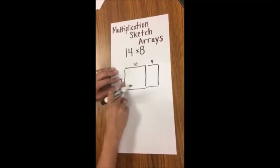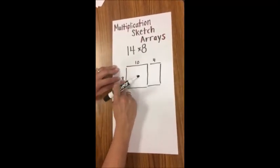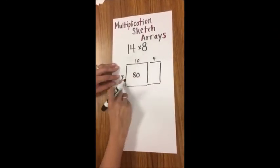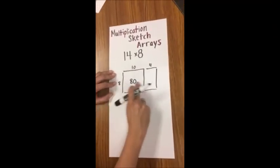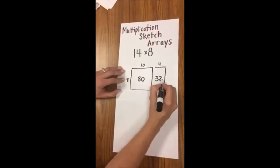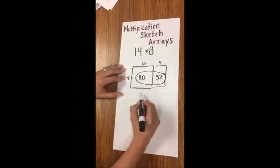Now we're going to drag our finger over and up and multiply 8 times 10, which is 80, and again 8 times 4, which is 32. Then I'm going to add these together to get my answer.